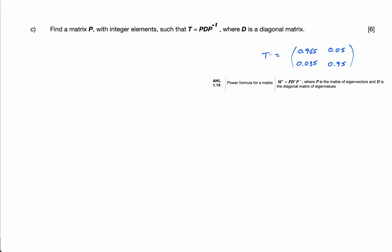So hopefully when you see this, you recognize that this is coming straight out of this formula for the power formula for a matrix, which is in the formula booklet. So this is basically the same thing, it's even the same letter P. We're trying to find P, which is the matrix of eigenvectors, and D is a diagonal matrix of eigenvalues. We don't need to find D in this question, we just need to find P.